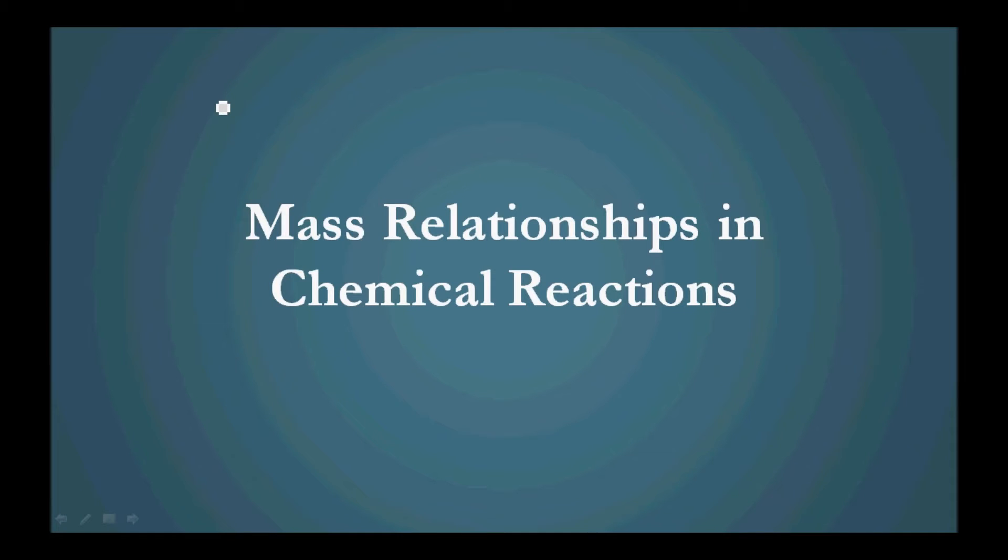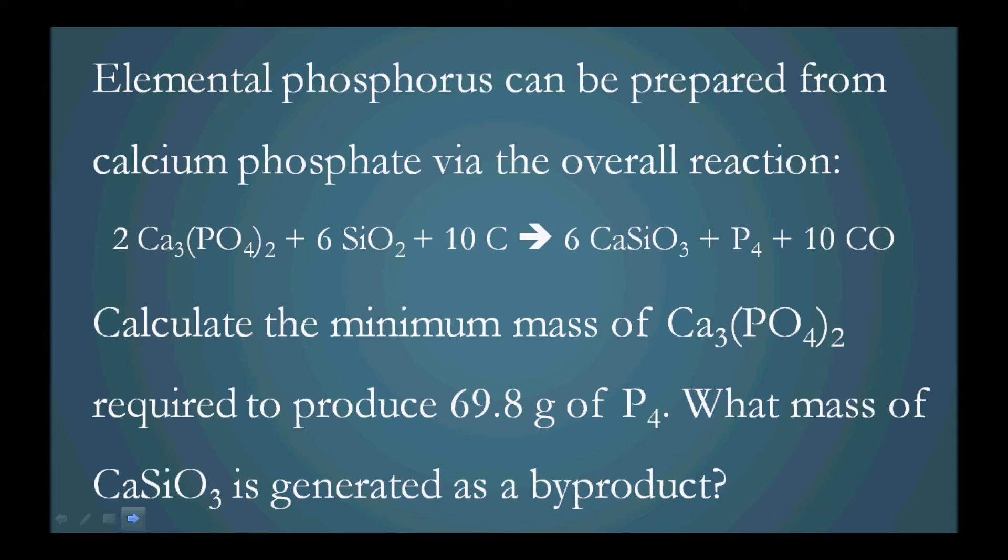Mass relationships in chemical reactions. So here's the problem. Elemental phosphorus can be prepared from calcium phosphate via the overall reaction.